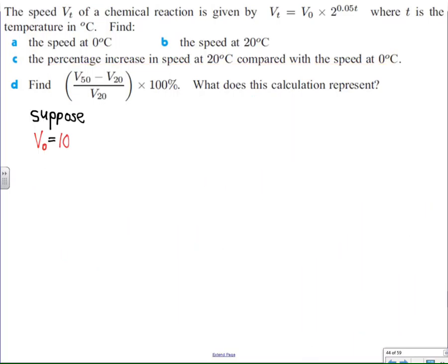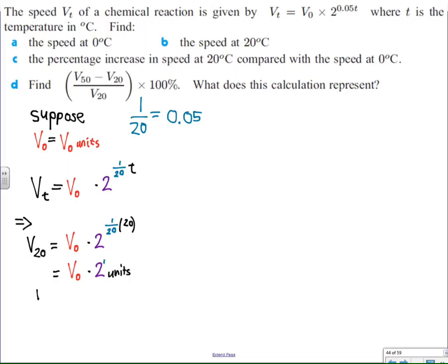This is where we get into algebraic thinking and mathematical reasoning. You see, it doesn't matter whether I choose 100 units or whether I choose V naught units. Not 100, not 50, V naught. I don't know how much, but it doesn't really matter. V sub 20 is going to be V naught times 2 to the 1/20 times 20, which is 2 V naught. In other words, the reaction speed will double from 0 to 20 degrees Celsius, just like it did before. This is how we express it. It doesn't matter how much I start with, it'll still take 20 degrees to double my reaction speed.